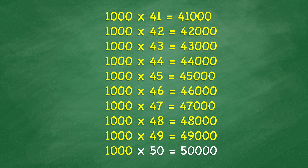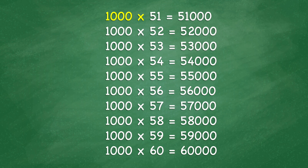1,000 x 49 equals 49,000. 1,000 x 50 equals 50,000. 1,000 x 51 equals 51,000. 1,000 x 52 equals 52,000. 1,000 x 53 equals 53,000. 1,000 x 54 equals 54,000. 1,000 x 55 equals 55,000. 1,000 x 56 equals 56,000.